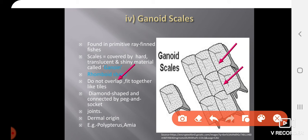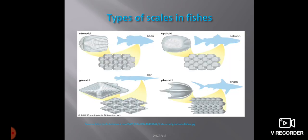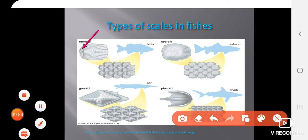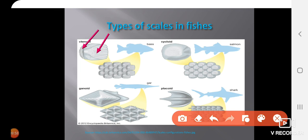Looking at this picture showing all scales together: the Ctenoid scale has small teeth-like structures and concentric lines. The Cycloid scale is similar but lacks the tiny teeth. The Ganoid scale is diamond-shaped. The Placoid scale has a trident spine and a basal rhomboidal plate. These are the four types of scales used to identify and classify fishes. Thank you. In the next part, we will see the fins of fishes.